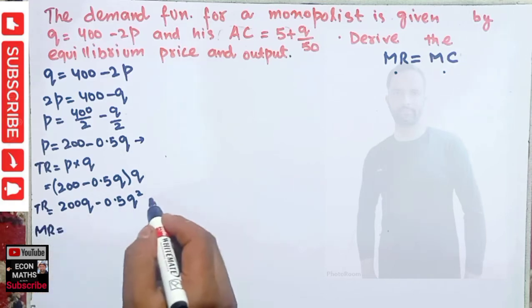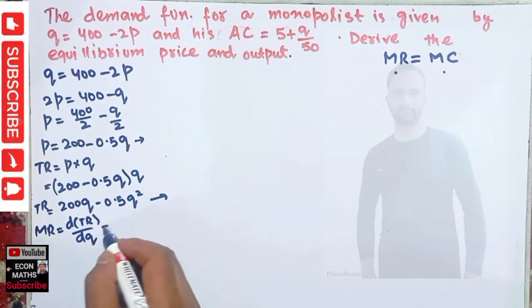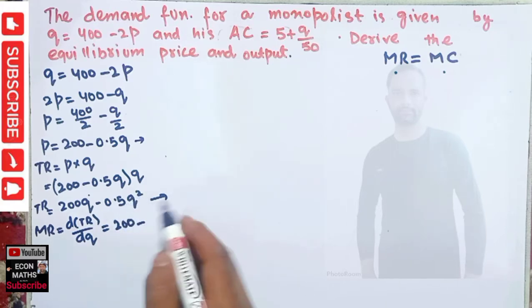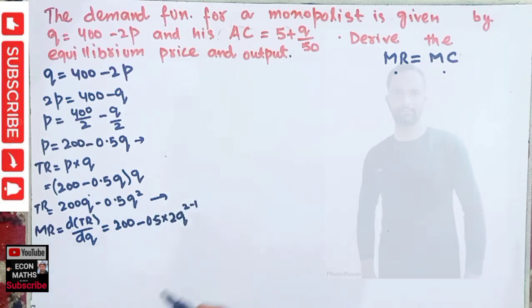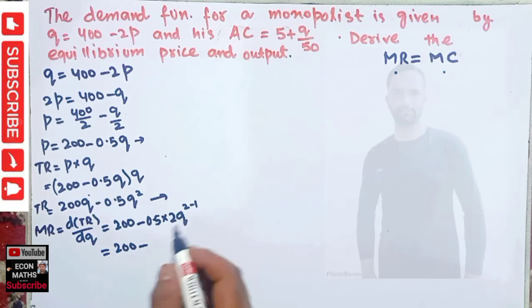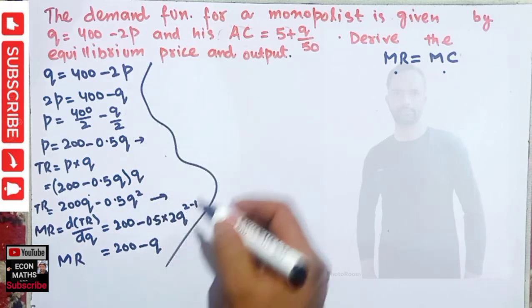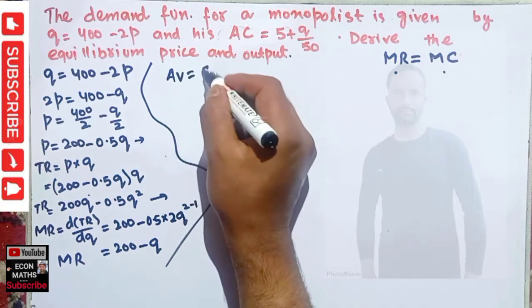Marginal revenue is the derivative of the total revenue function with respect to quantity. The derivative of 200Q is 200, and the derivative of 0.5Q² by the power function rule is 0.5 × 2Q = Q. So marginal revenue = 200 − Q.